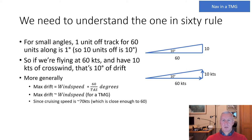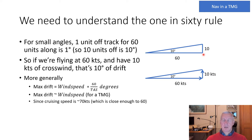There are some things we need to understand to be able to do that. The first is the one-in-60 rule, which says that for small angles, one unit off track for every 60 units along is one degree, so 10 units off is 10 degrees. If we've got 60 units along track and 10 units off, that's 10 degrees. Flying at 60 knots with 10 knots of crosswind gives 10 degrees of drift.